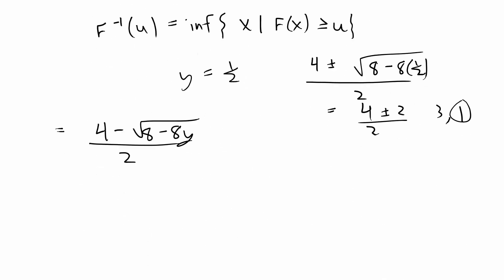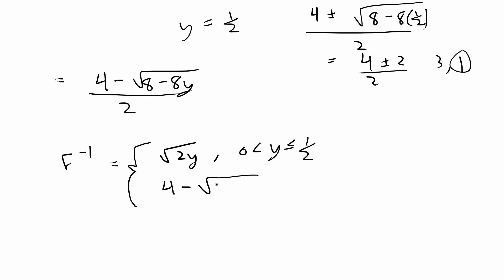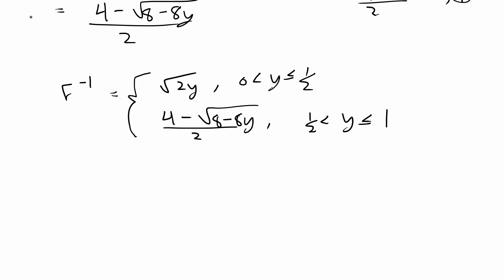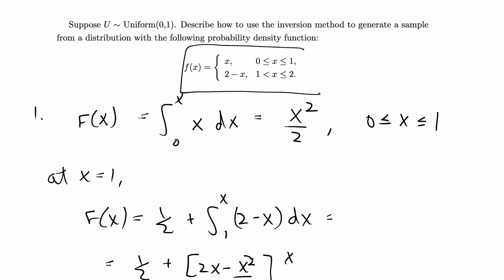The complete inverse CDF is: the square root of 2y for y in (0, 1/2], and (4 minus the square root of 8 minus 8y) divided by 2 for y in (1/2, 1]. For the final step, you plug in u, a uniform 0 to 1 random variable, into your inverse CDF. Sampling from this distribution will give samples from the target triangular distribution.